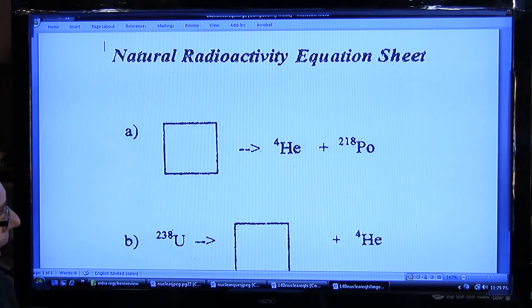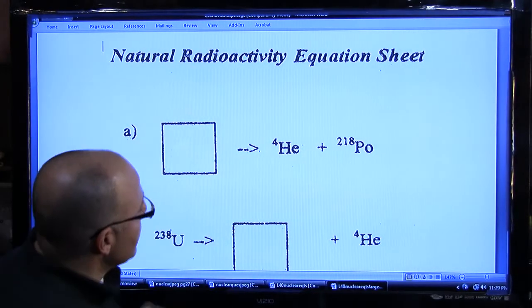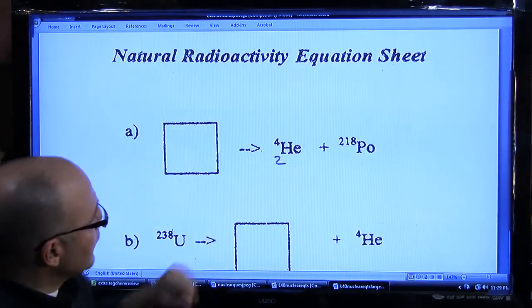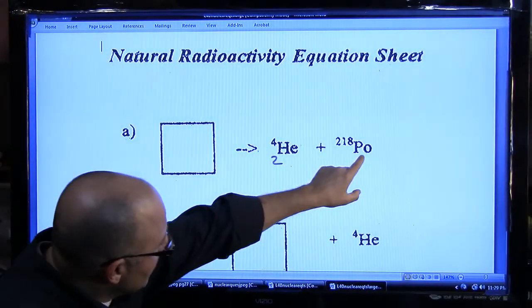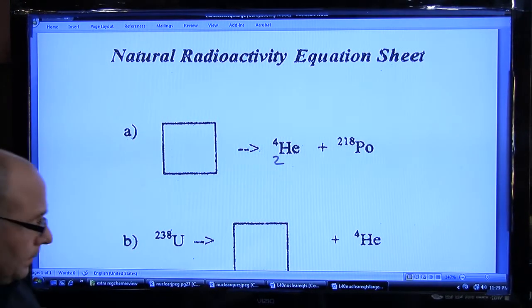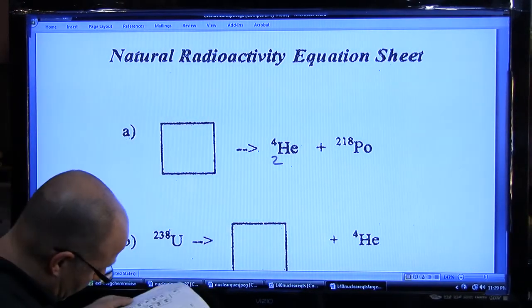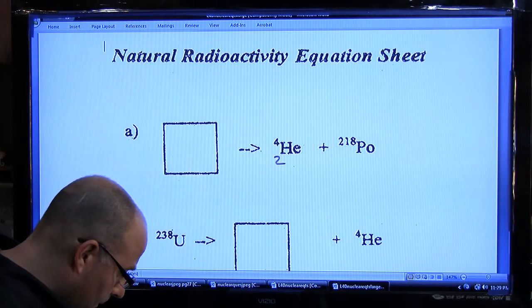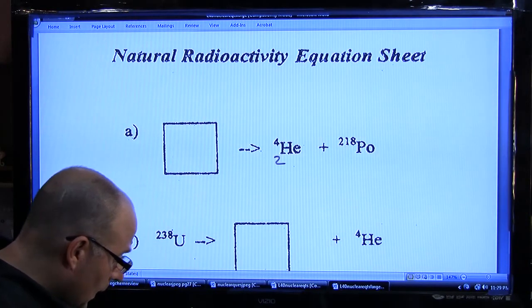So we're going to work one of these backwards. Again, it's He-4-2, or Alpha-4-2, so this is an alpha decay. Po-218, you're going to have to look up its atomic number. Polonium 218 would be 84.